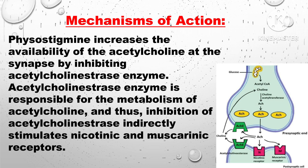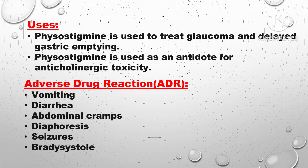Mechanism of Action: Physostigmine increases the availability of acetylcholine at the synapse by inhibiting the acetylcholinesterase enzyme. Acetylcholinesterase is responsible for the metabolism of acetylcholine, and thus its inhibition indirectly stimulates both nicotinic and muscarinic receptors. Physostigmine is used to treat glaucoma and to delay gastric emptying.